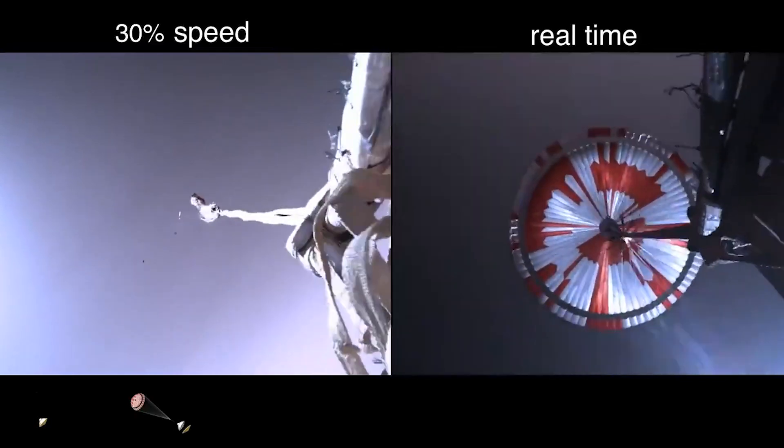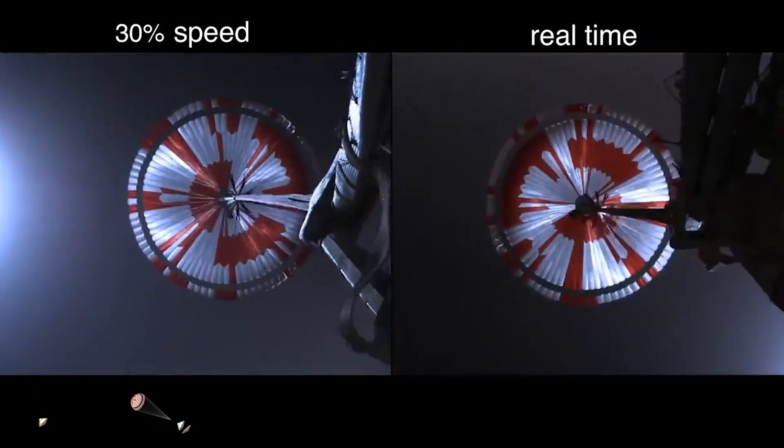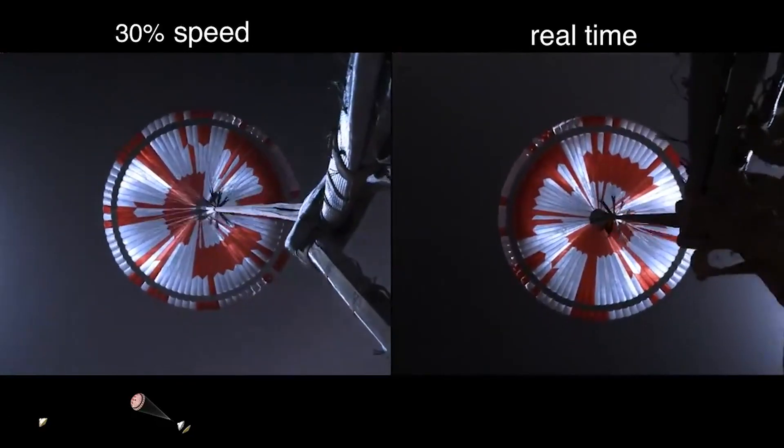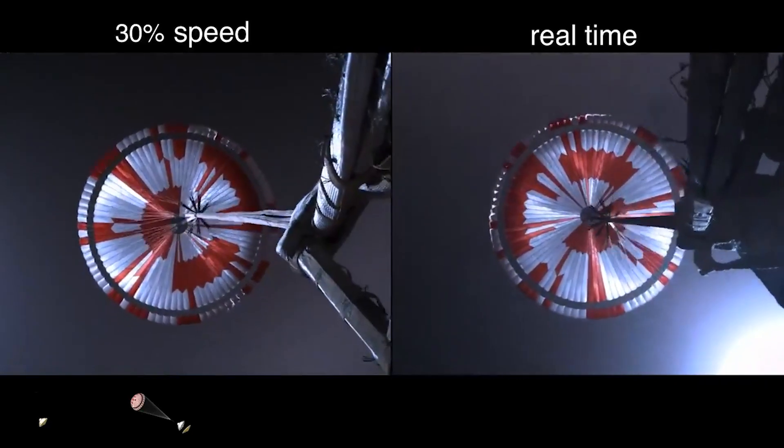Telemetry indicates chute deployed. The navigation has confirmed that the parachute has deployed, and we are seeing significant deceleration in the velocity. Our current velocity is 440 meters per second at an altitude of about 12 kilometers from the surface of Mars.